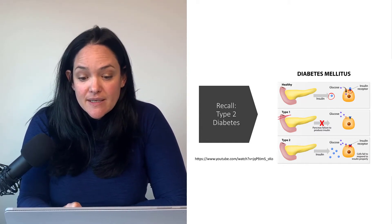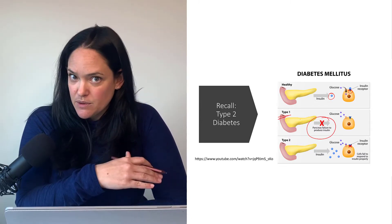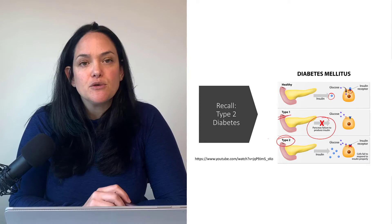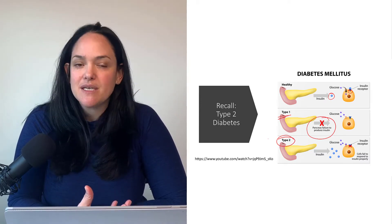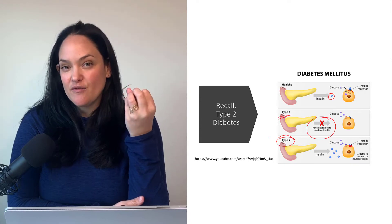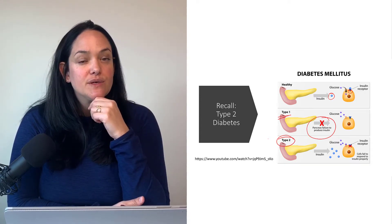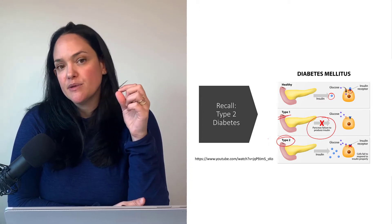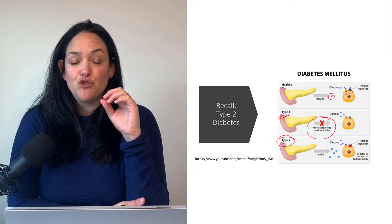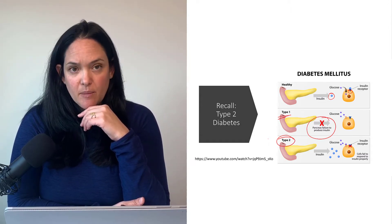In type 1 diabetes, the pancreas fails to produce insulin — but that's not what we're focusing on here. We are more focused on type 2 diabetes, which is often referred to as adult-onset diabetes. That said, we are seeing more and more type 2 diabetes developing in adolescence, probably due to increases in obesity in the population.